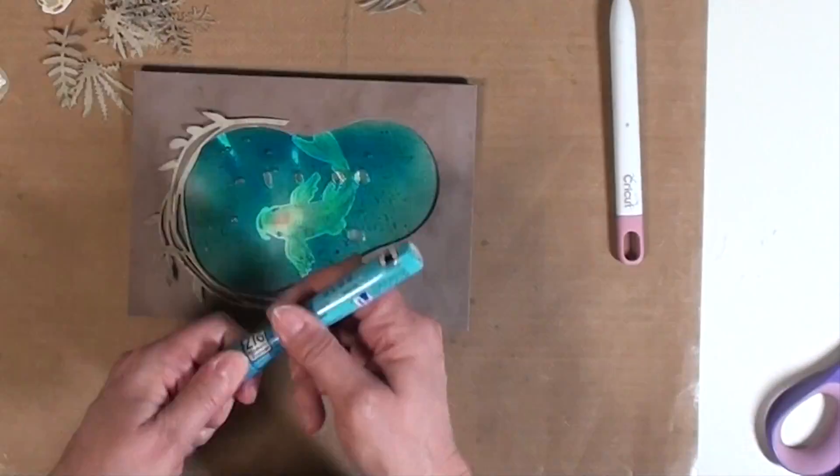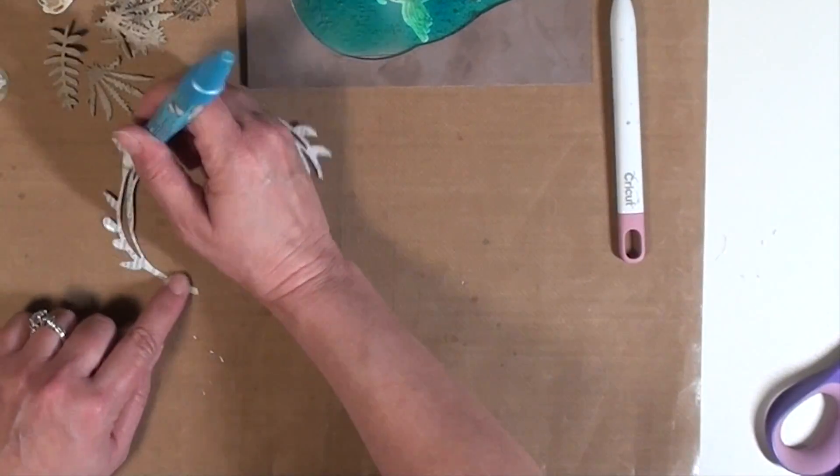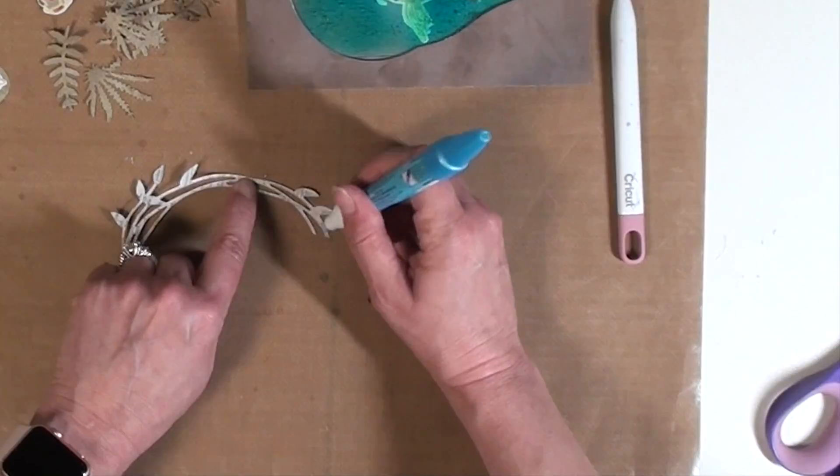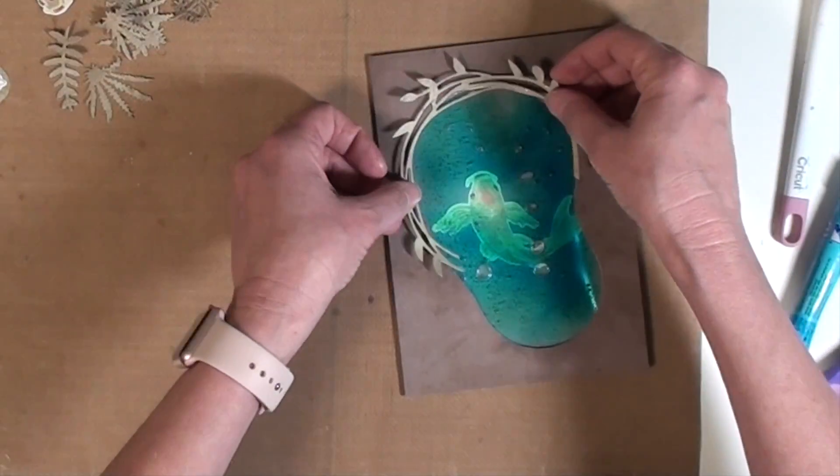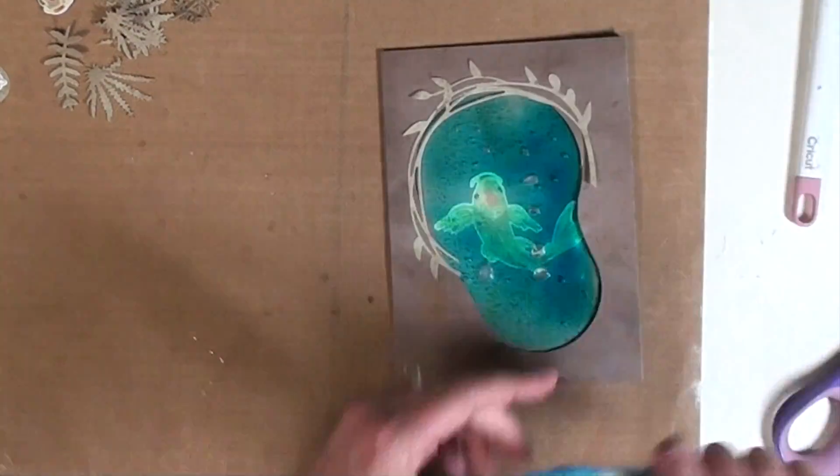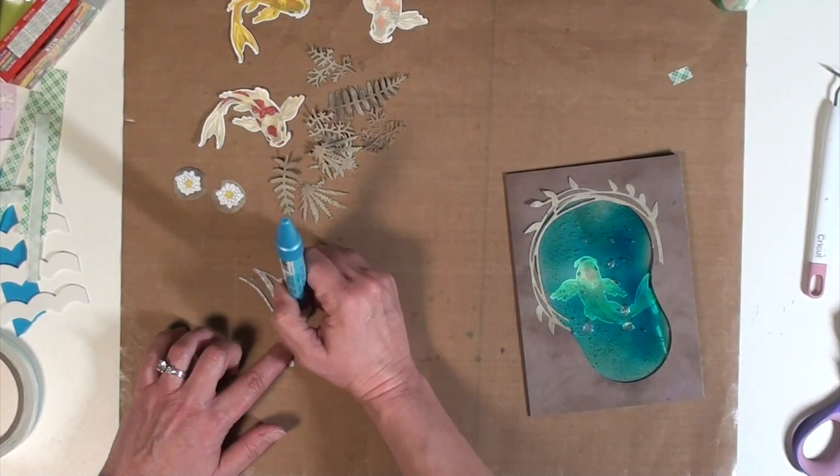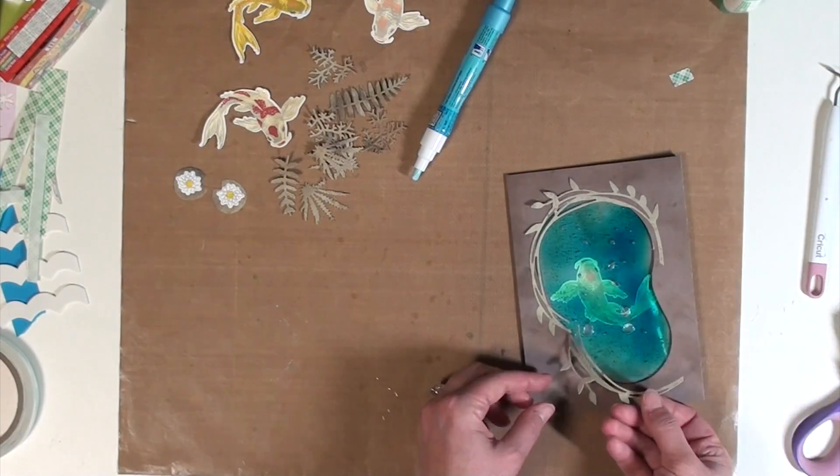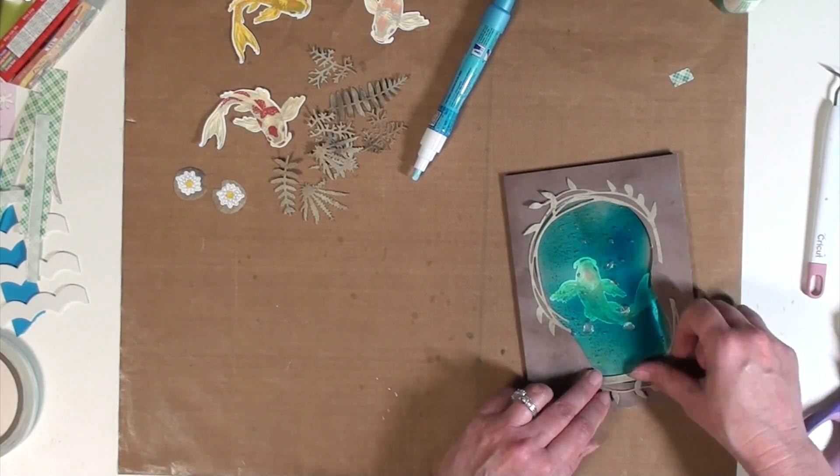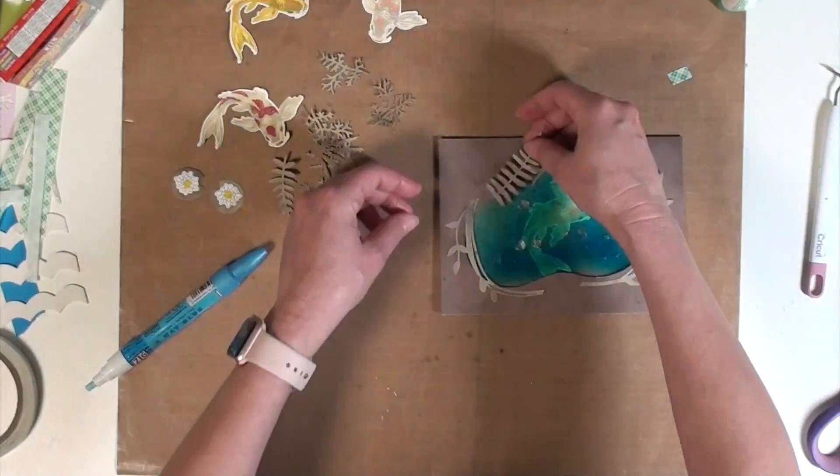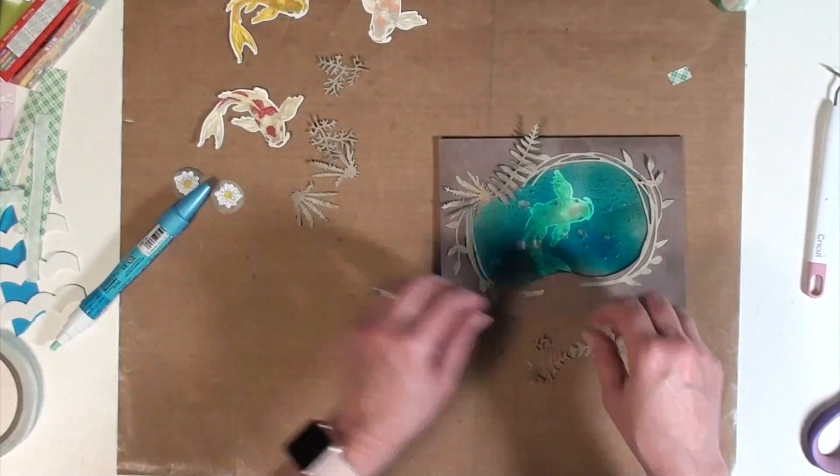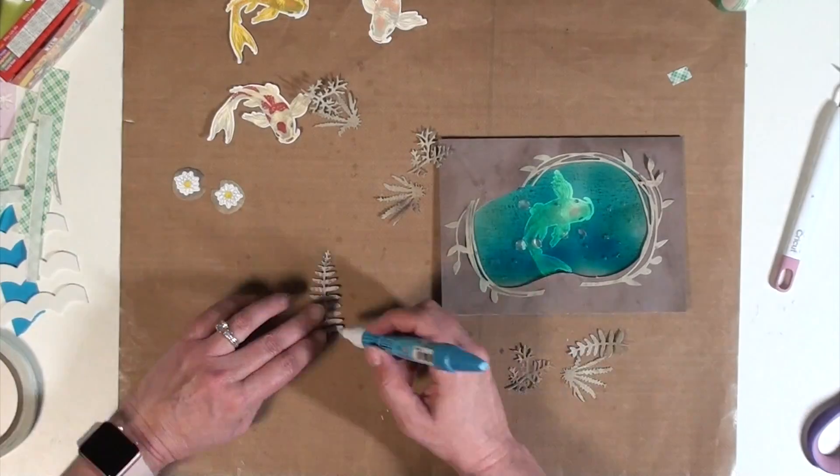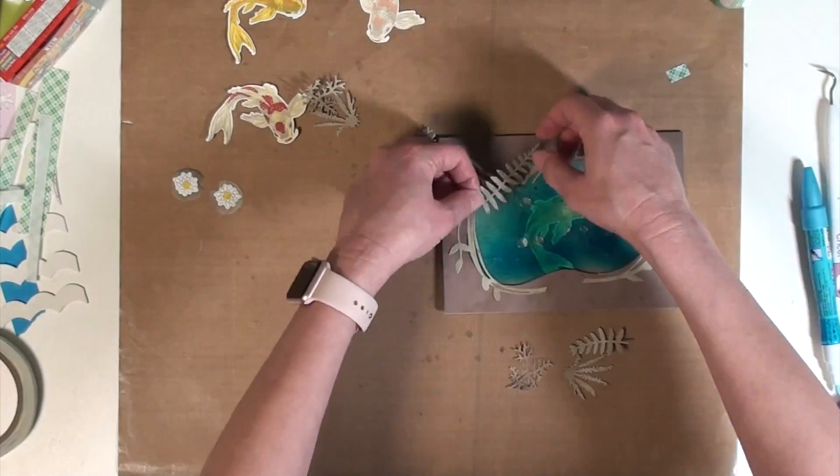One part that I didn't show in this video is when I stamped the water lilies and put those together but you'll see it in the final assembly that's coming up where I did that piece of it. Now at this point I do speed it up quite a bit just showing where I adhere all the foliage pieces around the pond, glue on the fish as well as the water lilies.